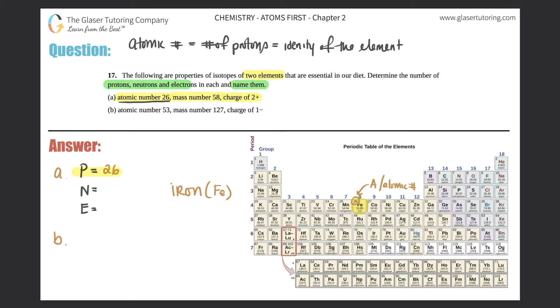Now we just got to figure out how many neutrons and electrons there are. So the neutrons will come from the mass number. They told us that the mass number was 58. And mass number is always equal to the number of protons plus the number of neutrons.